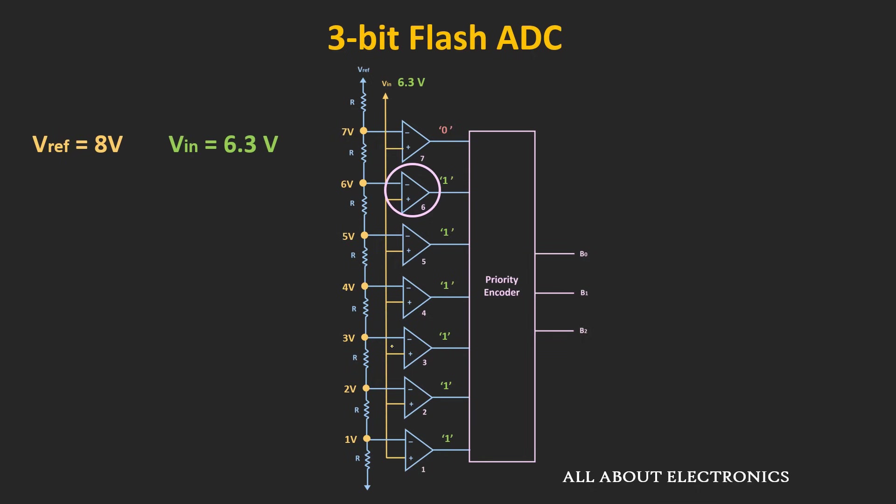During the conversion, the input to the comparator should remain constant, because if it changes, the output of the comparator will also change, and due to that, the binary code at the output will also change. To avoid that, a sample and hold circuit should be used along with this ADC. This sample and hold circuit samples the input signal and holds it until the conversion gets completed.